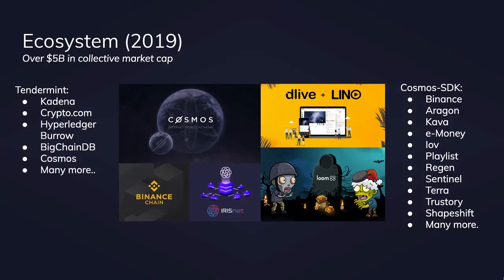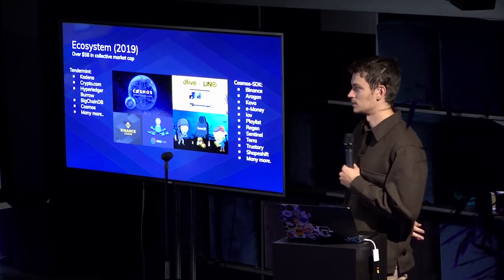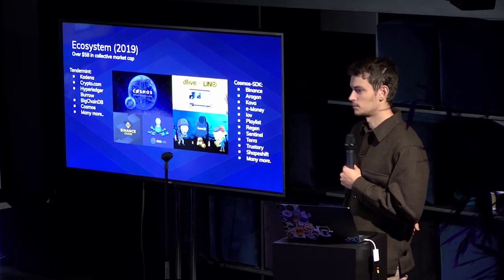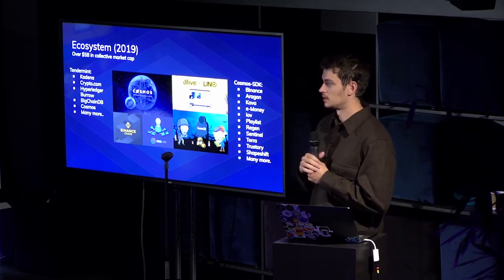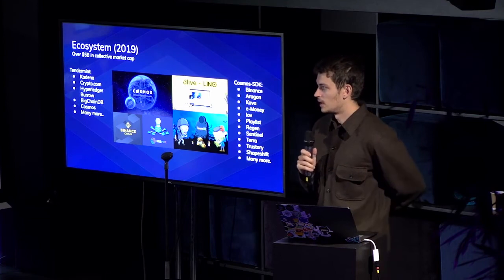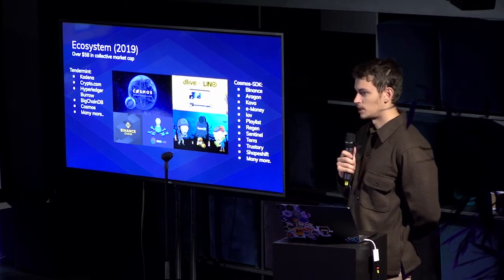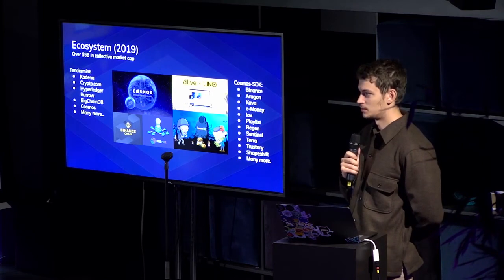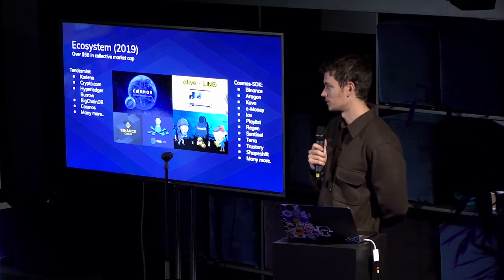Currently, the ecosystem has over $5 billion in collective market cap. Notable mentions on the Tendermint side include Hyperledger. At today's conference, there are four protocols building on Tendermint: Cosmos, Agoric, Hyperledger Burrow, and Foam. This is an ongoing and ever-growing list — we're seeing new people come on, including those who haven't told us they're using the software. That's what we're all here for: open source software and enabling others to use it.